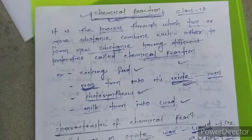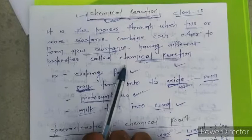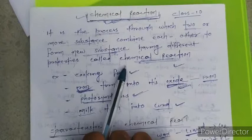Chemical reaction is just the process through which two or more substances combine with each other to form new substances having different properties. Chemical reaction means a product is formed whose properties are quite different from the reactants.